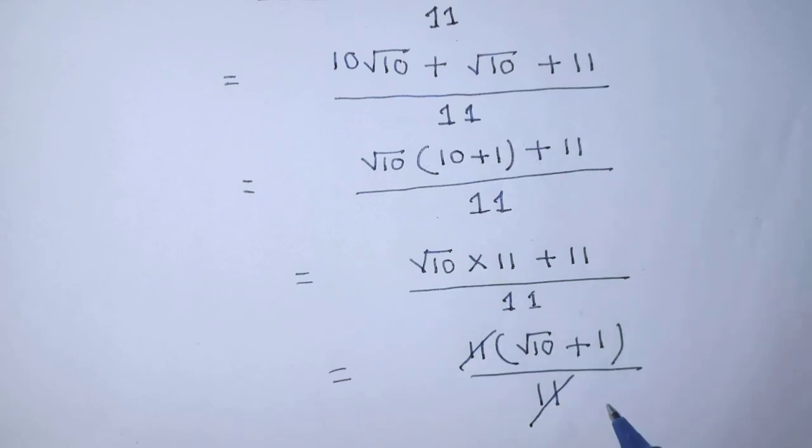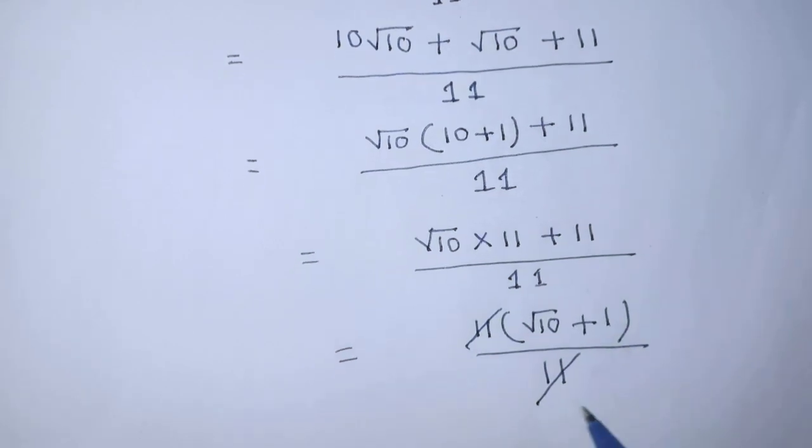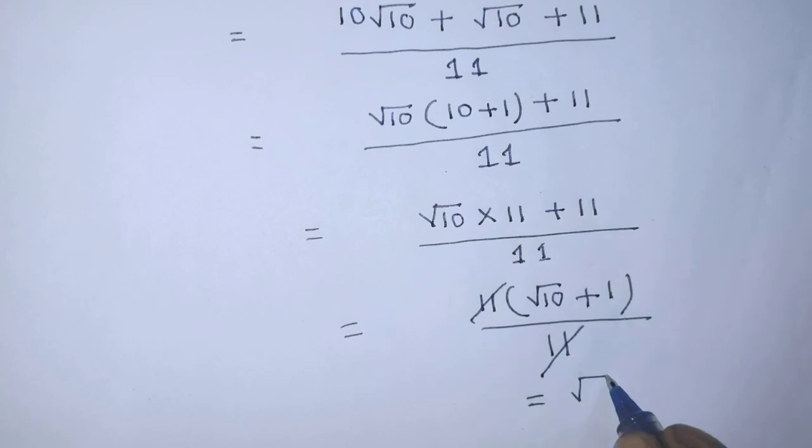Now we can cancel 11 from numerator and denominator, then it will be square root of 10 plus 1.